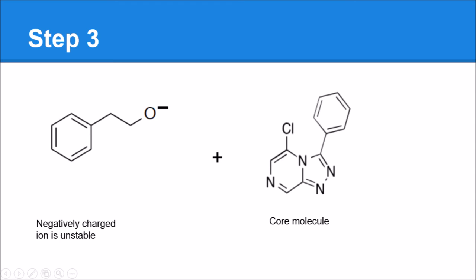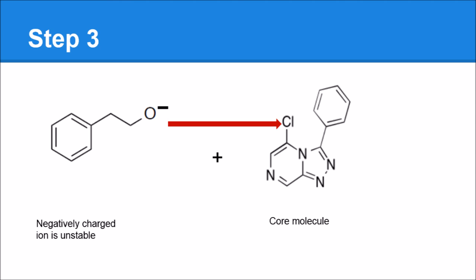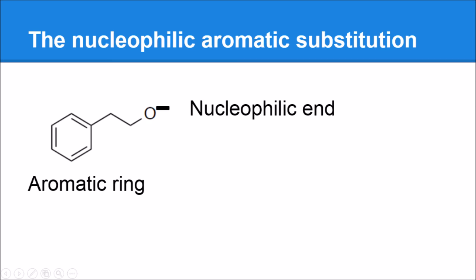So what it's going to do is find this molecule and attack this chlorine. It knocks off the chlorine in the aromatic substitution reaction and forms this product, which is exactly what we want. That is the aromatic substitution reaction because this is our aromatic ring. It is nucleophilic because it has an O⁻ on the end — it has an extra electron it can donate into a bond — and it substitutes out the chlorine. That's the aromatic nucleophilic substitution reaction.